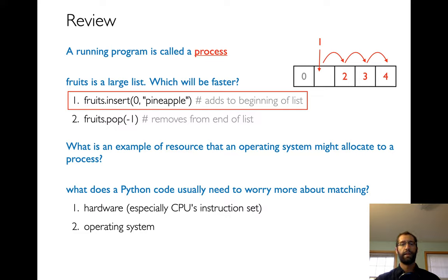Okay, so next question. What is an example of a resource that an operating system might allocate to a process? Well, it turns out there's lots of resources. But the big one we talked about last time was time on the CPU.